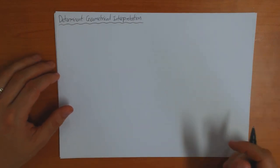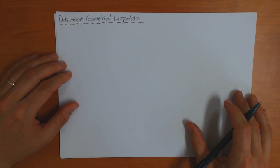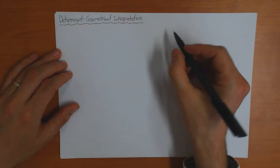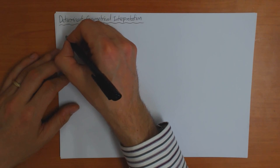In this video I'm going to talk about a geometrical interpretation of the determinant of a matrix. What does it mean? We've already answered this question in two dimensions.